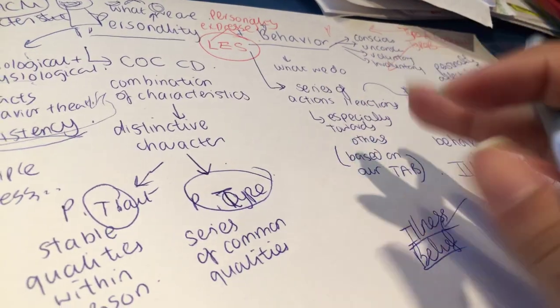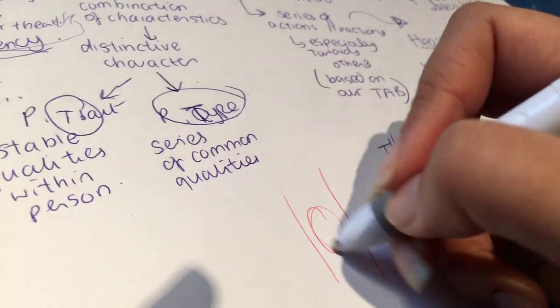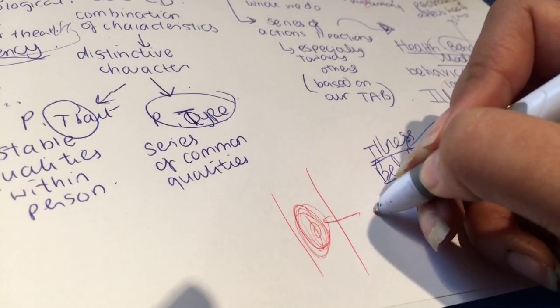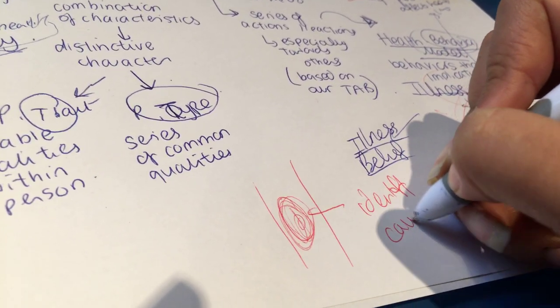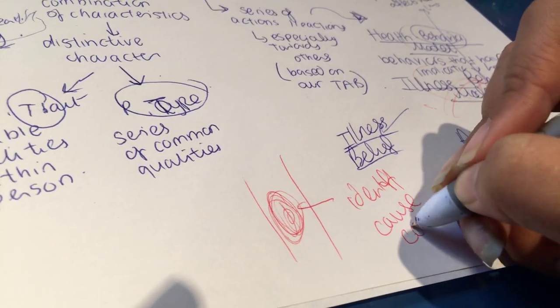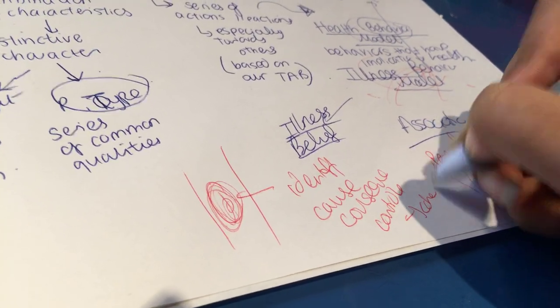And you also need to know a little bit about illness, the evolution of an illness. So for example, if somebody's hand gets a rash, first you have to identify what it is, then you have to find out why it's there, what's the cause of it. Then you have to work out what the consequence of it is and how you can control it. And you have to have coherence of illness.